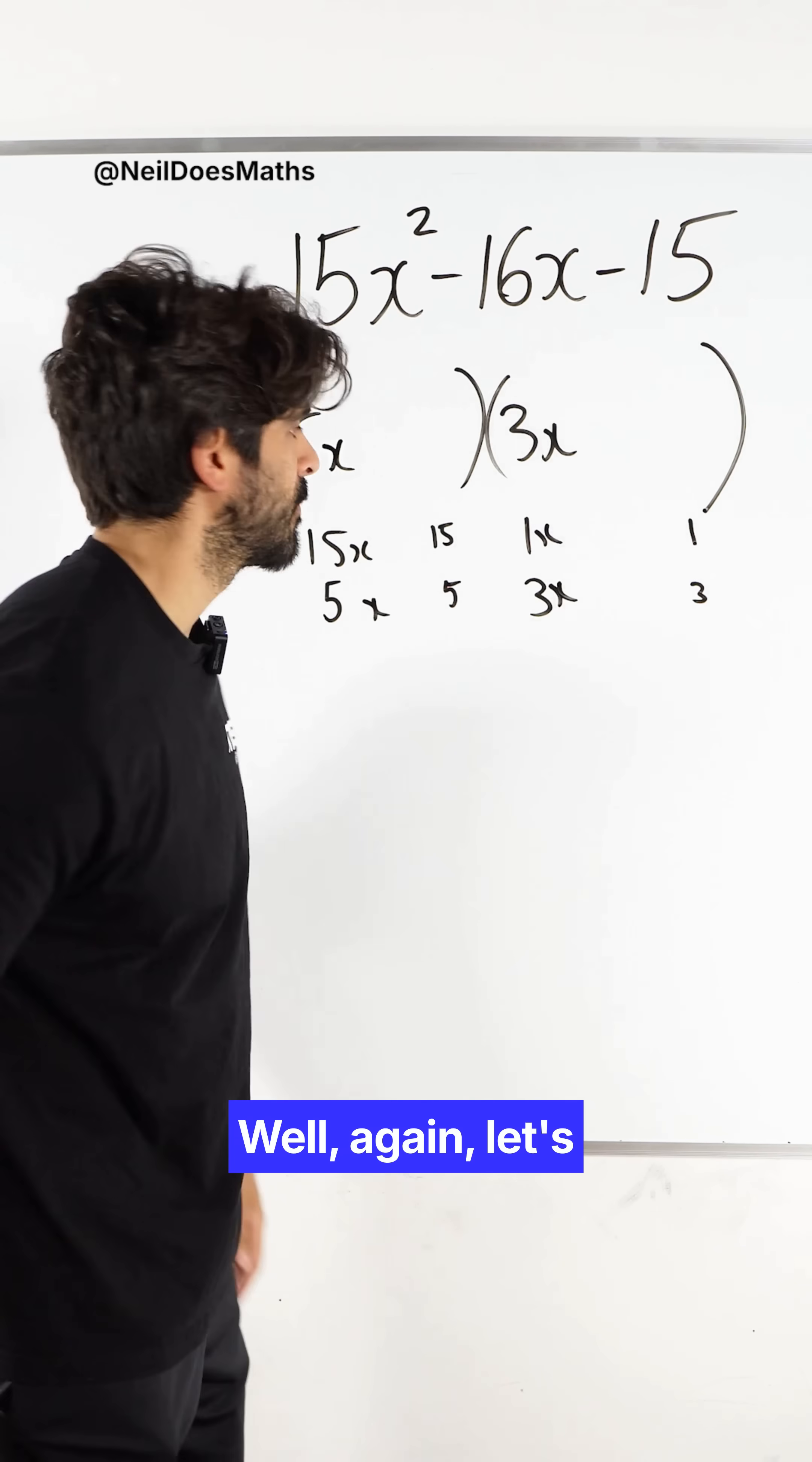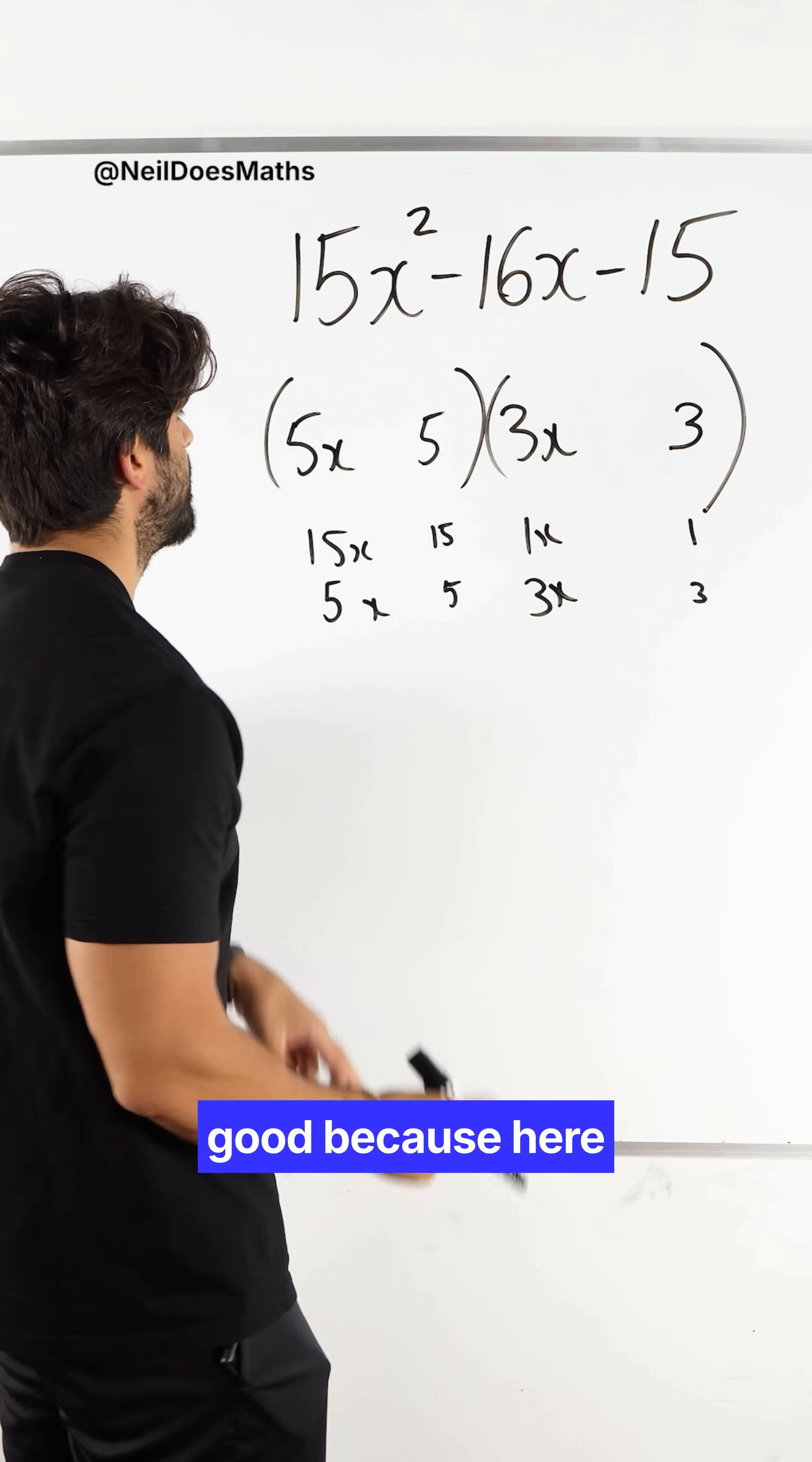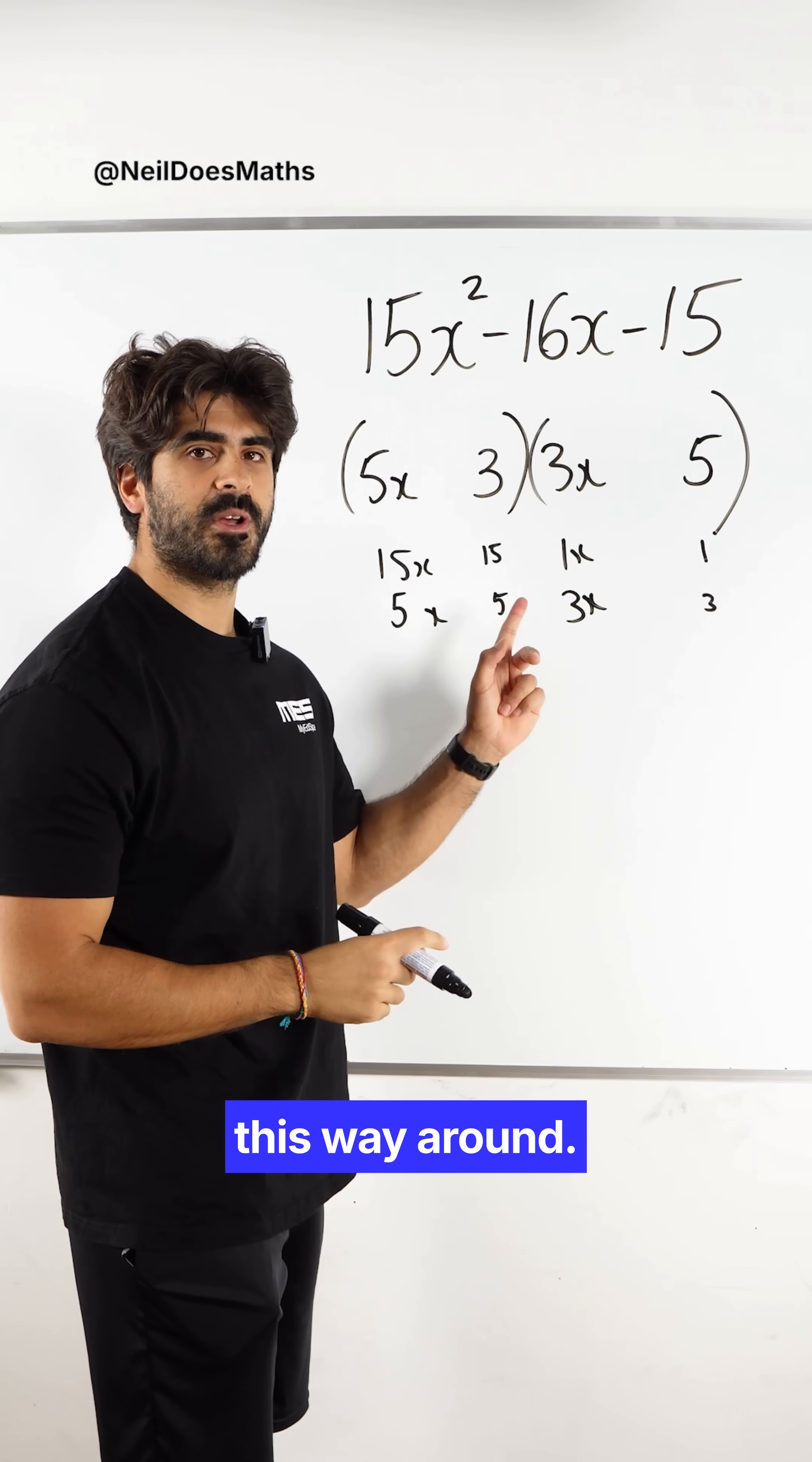So I again have the option of 15 and 1 and then 5 and 3. So which pair do we choose? Well, again, let's stick to the numbers closest together. However, we need to be careful. If I put 5 and 3 here, it's not looking good because here we have common multiples of 5, common multiples of 3. We cannot have common multiples. So it can only be this way around.